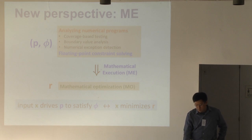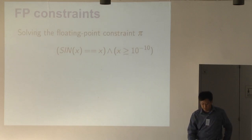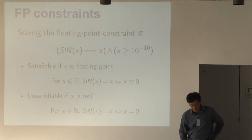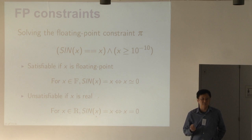I want to illustrate this concept ME using two instances. One is how to solve floating point constraints, the other one is how to perform coverage based testing. For floating point constraints, let's look at this one here. We have sine X equal to X and we want X to be smaller or equal to this tiny constant. In terms of real numbers, this is clearly not solvable. But for floating point this is solvable. This also illustrates the difference between floating point semantics and real semantics. For reals, the only solution for sine X equal to X is X has to be zero.